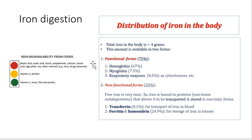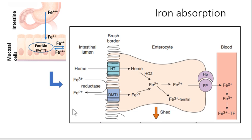If we talk about bioavailability of iron, the parts shown in red basically decrease the absorption of iron, and those shown in green increase the absorption of iron. Coming to digestion and absorption — in the stomach, stomach acid converts iron into the Fe²⁺ (ferrous) form, because ferrous is the only form which can be transported through the epithelium.